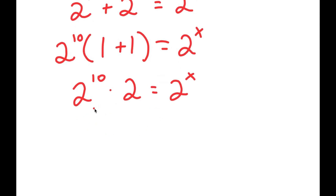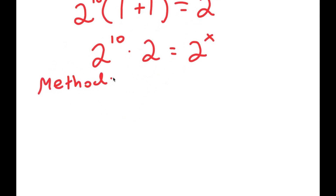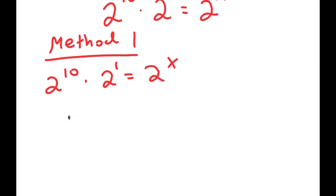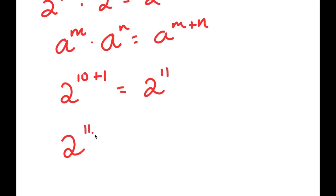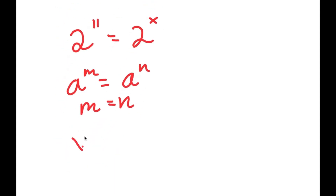For Method 1, I have 2 to the power of 10 times 2 equals 2 to the power of x. I rewrite 2 as 2 to the power of 1, and using the rule a to the power of m times a to the power of n equals a to the power of m plus n, I get 2 to the power of 10 plus 1, which equals 2 to the power of 11. So 2 to the power of 11 equals 2 to the power of x. Since the bases are equal, x equals 11.